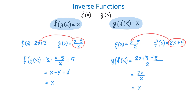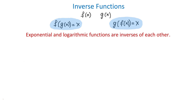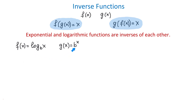Now let's talk about exponential and logarithmic functions. The exponential and the logarithmic functions are inverses of each other, so their composition must also be equal to x. Let f of x be equal to log base b of x, and g of x be equal to b to the x power. This is the logarithmic function and this is the exponential function, and they both have the same base b.